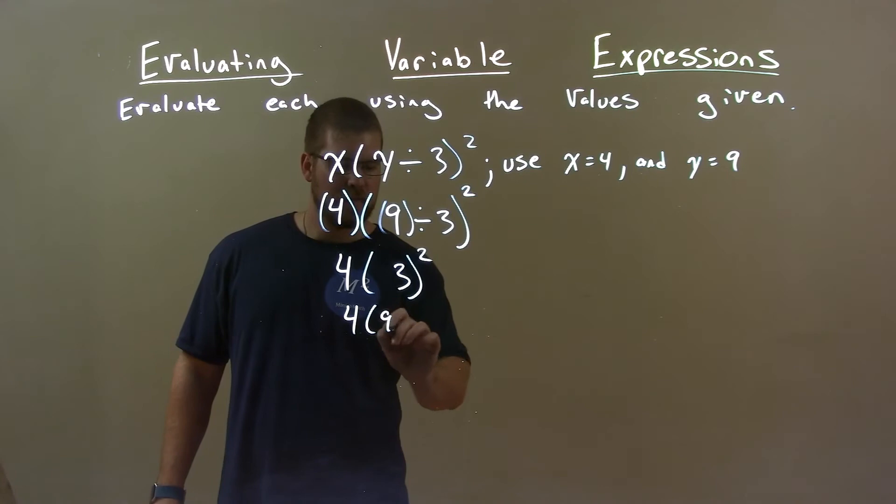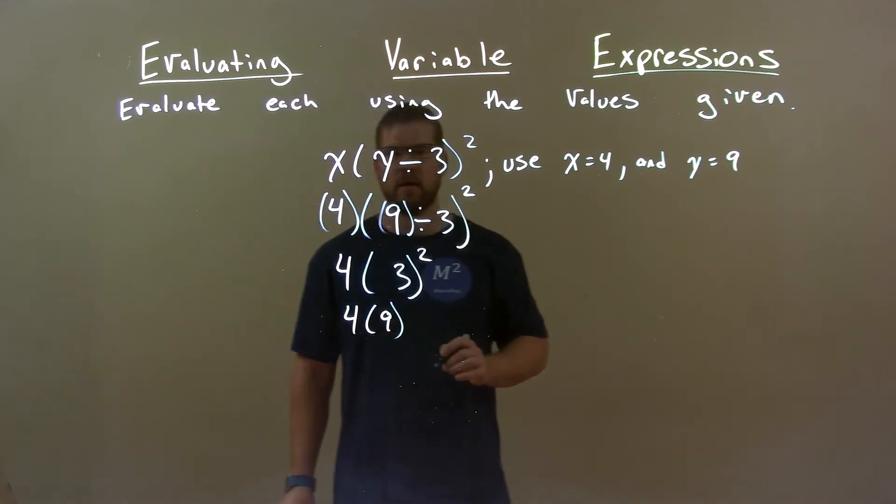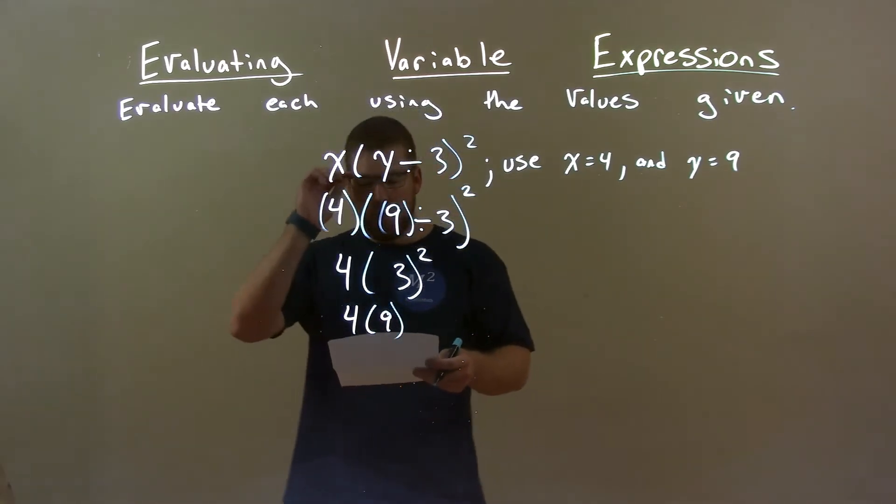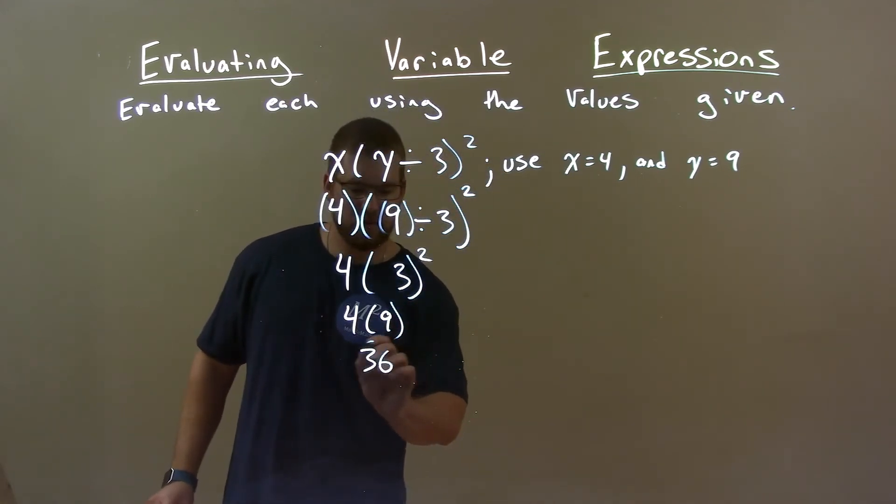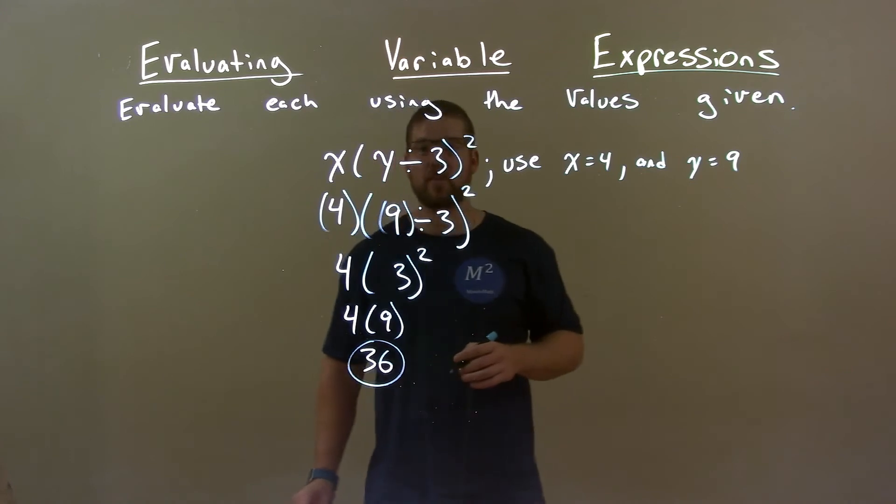So, we have 4 times 9, okay? And then, we're left with just 4 times 9 here. Well, 4 times 9 is 36. So, our final answer here is just 36.